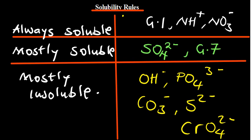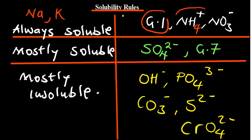So number one: always soluble. What is always soluble? Group 1 elements are always soluble. For example, sodium, potassium, and other elements in group 1 — they are always going to be soluble. There may be some exceptions, but generally, whenever you are given something containing sodium as a salt, it is soluble. Ammonia is always going to be soluble as well. And nitrate. So all salts containing group 1 elements, ammonia, and nitrate are going to be soluble — there are no exceptions.